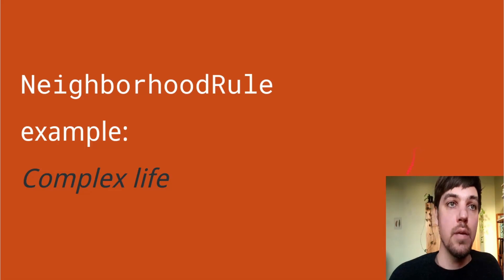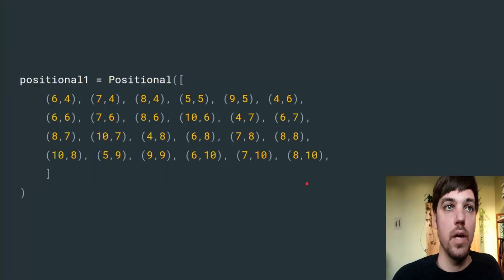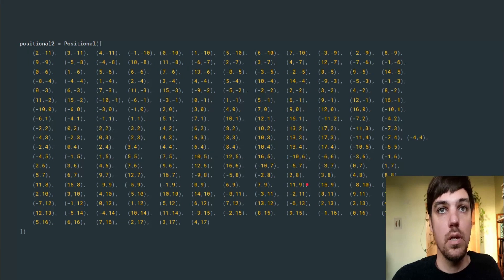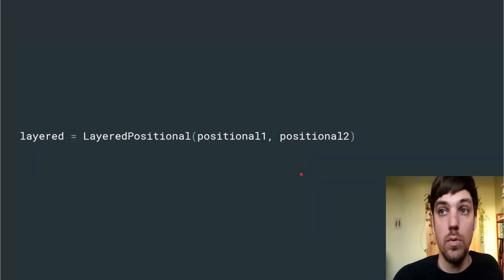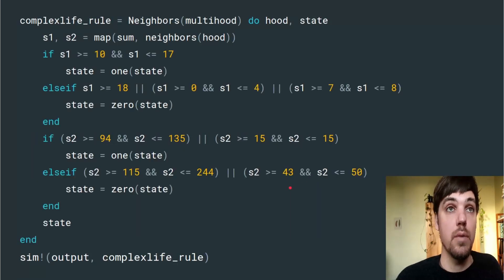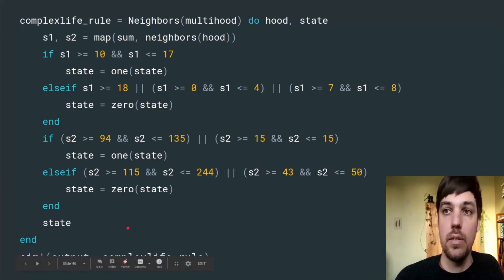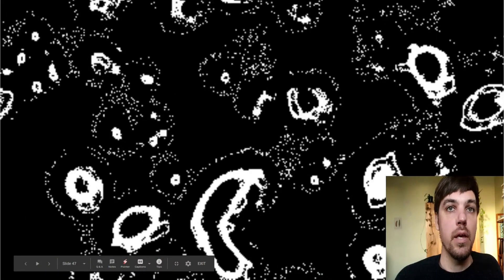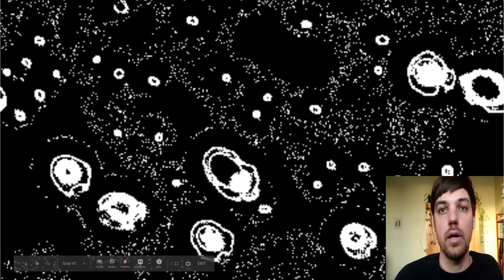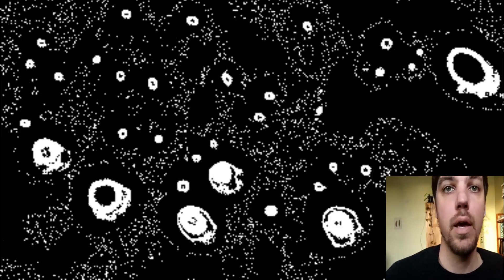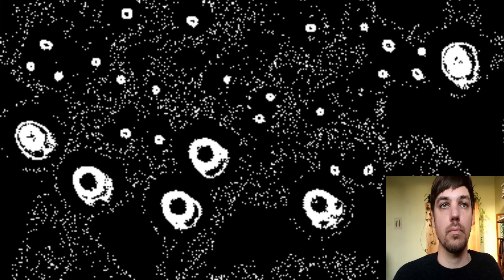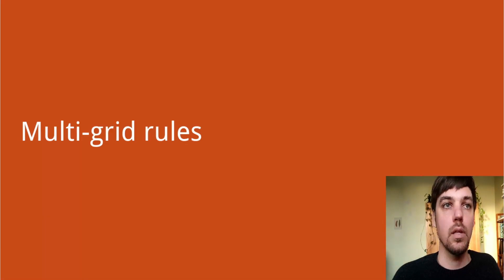The last neighborhood rule I'll give an example of is complex life. This combines multiple very complex positional neighborhoods into a single layered positional neighborhood. We can use them both as iterables and sum them and use those sums to determine the state that's written to the cell on the next iteration. When we run that, we get a pattern like this with quite interesting biology-like behaviors.